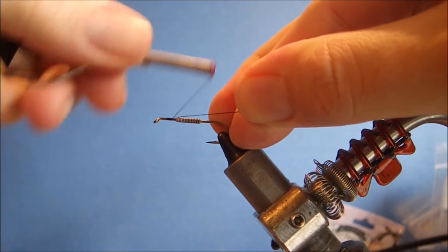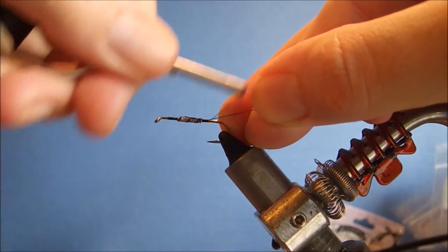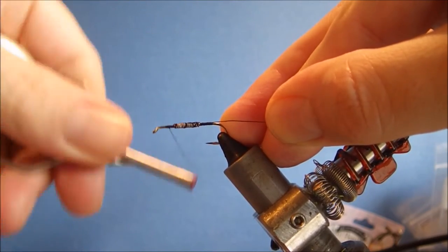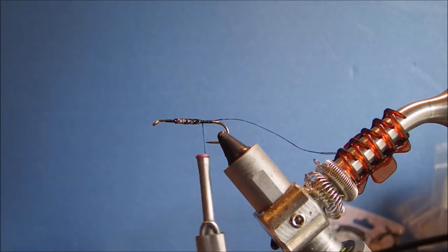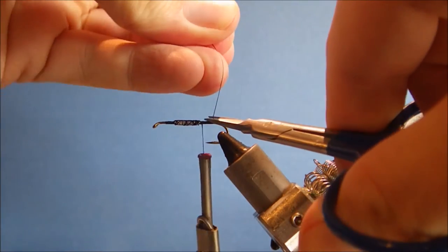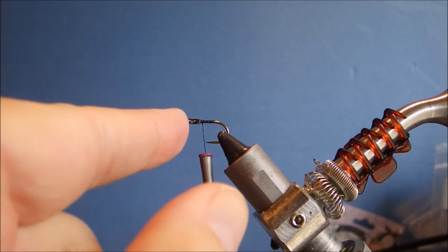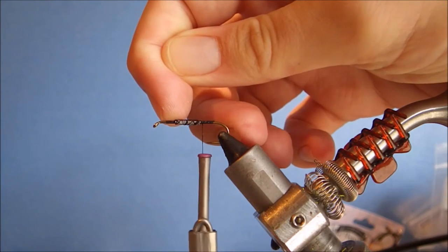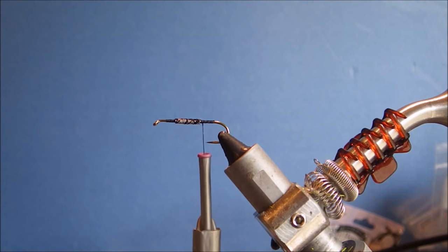But I mean you can coat the shank if you like. And then I'll start my thread. This is just 6-ought Danville's thread, Flymaster Plus. Get that locked securely in place. When you tie your lead on, do make sure and leave space to tie in your tail and space at the front to do your tying in of the chenille and securing your chenille rib and hackle, so that you don't rush the eye.